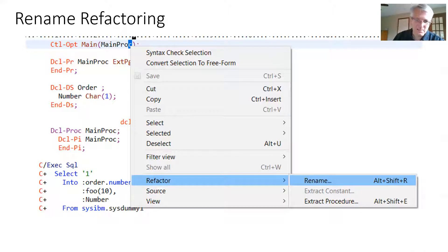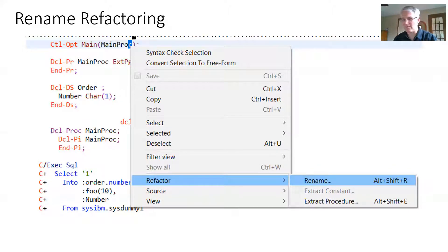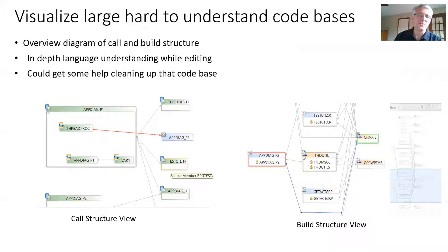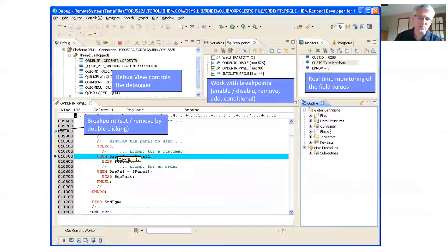We also help you rename your variables because we understand exactly what's going on and what is indeed a variable name versus a literal. Because we have that complete understanding of your code, you can refactor and clean up and maintain with confidence. Not only do we understand within a source file, we can understand relationships outside — the call structure, the ILE binding structure — and we can visualize this for you to help you manage your large code base.